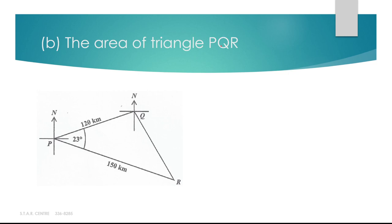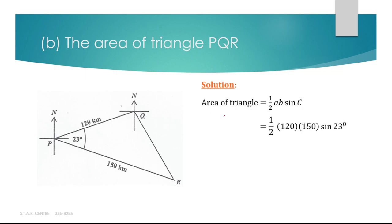Part B asks us to calculate the area of triangle PQR. Using the formula: area equals one half times A times B times sin C, where A and B are the two sides adjacent to the angle. With angle 23 degrees, the two sides are 120 and 150. Substituting: area equals one half times 120 times 150 times sin 23, which gives 3,516.6 kilometers squared to one decimal place.